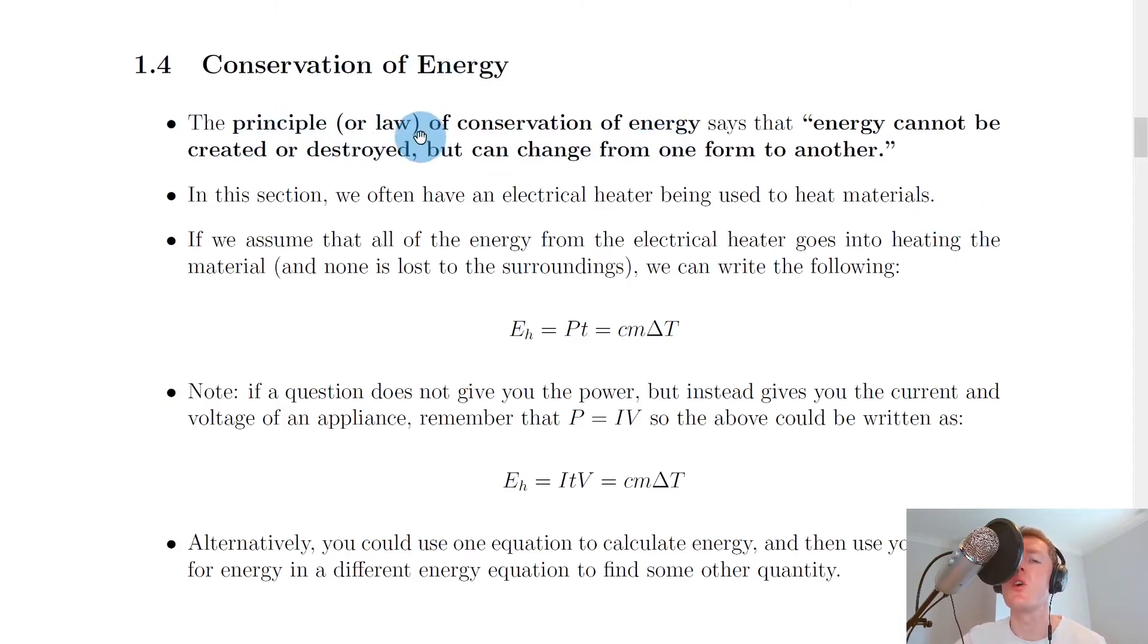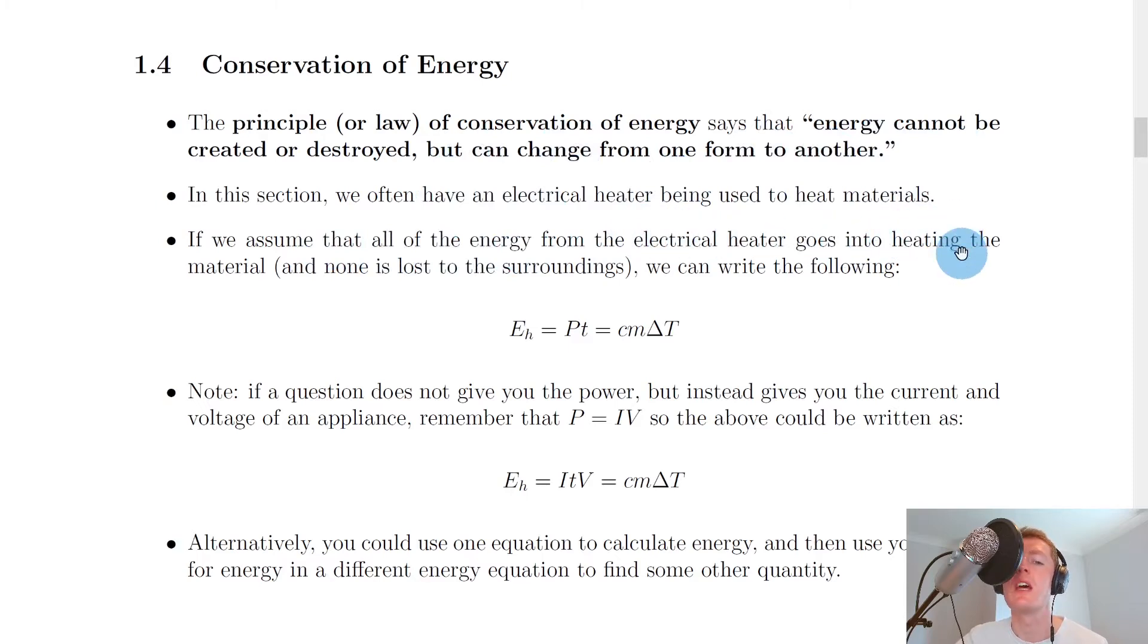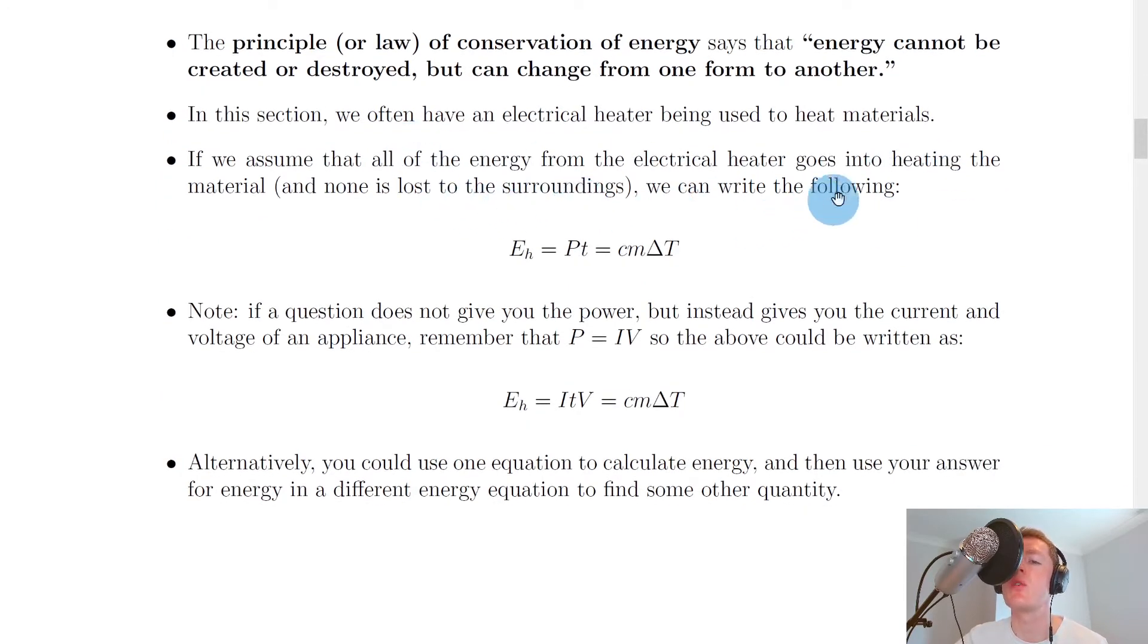The principle or law of conservation of energy says that energy cannot be created or destroyed, but can change from one form to another. In this section we often have an electrical heater being used to heat materials. If we assume that all of the energy from the electrical heater goes into heating the material and none is lost to the surroundings, then we can write the following.